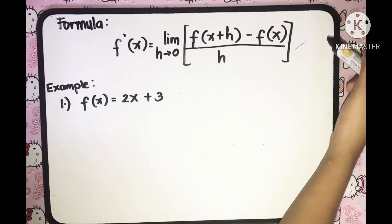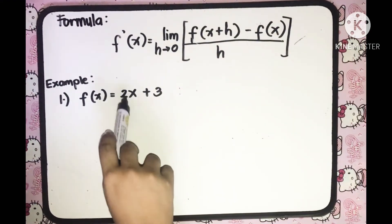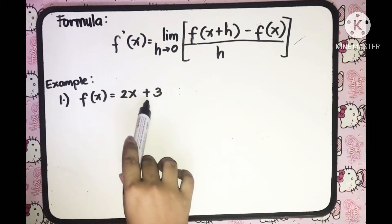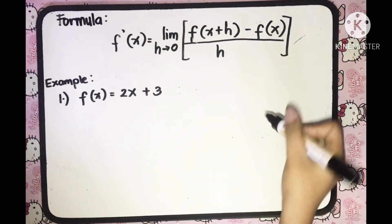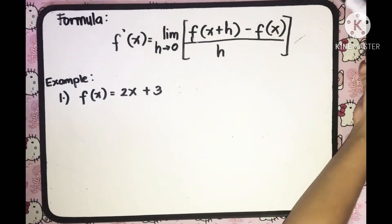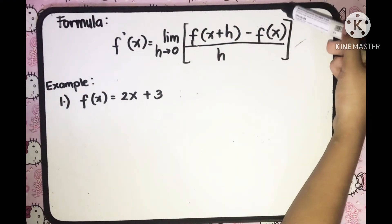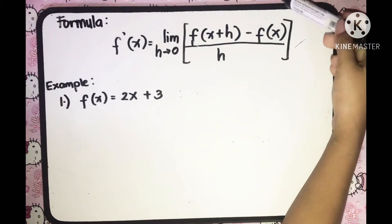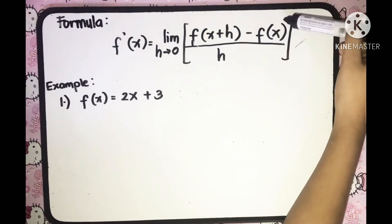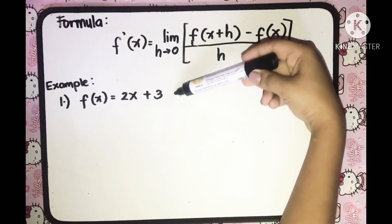In this example, we are to find the derivative of f of x which is equal to 2x plus 3, using the definition of derivative. So we are going to use this formula. The first thing we need to do is to define what f of x plus h and f of x are, based on the given function.